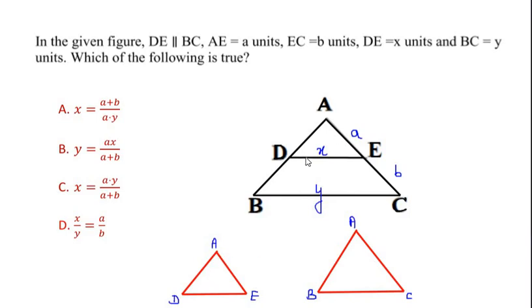The first triangle we can see here is this small triangle ADE which I have drawn here, and there is one more big triangle which is ABC.